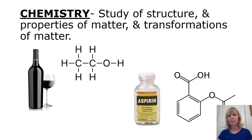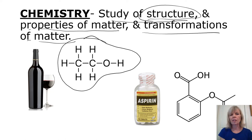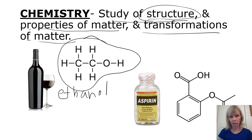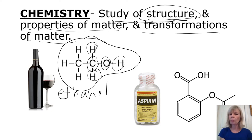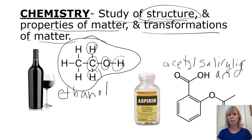The textbook definition of chemistry is the study of structure and properties of matter and transformations of matter. Structure is how atoms are put together — for example, ethanol, the alcohol in wine, has a specific structural formula where carbon is bonded to hydrogen and oxygen. How atoms are arranged makes compounds behave a certain way. Aspirin, whose chemical name is acetylsalicylic acid, is also an example. We'll be making aspirin in the lab — that's one of our most fun labs.